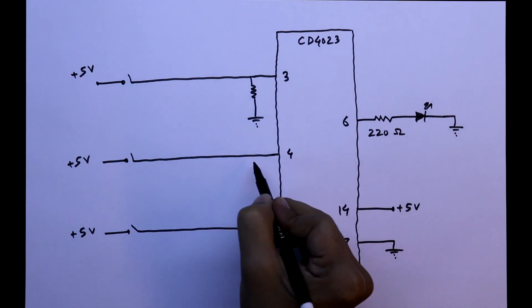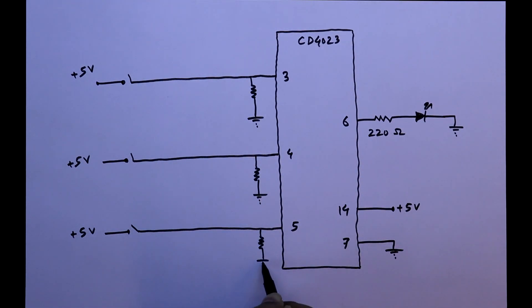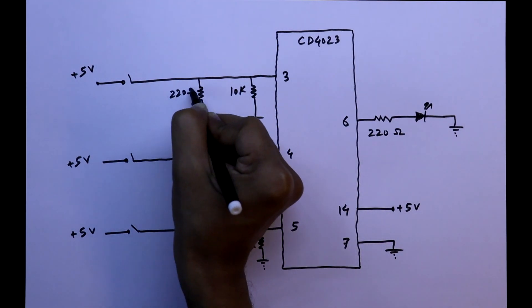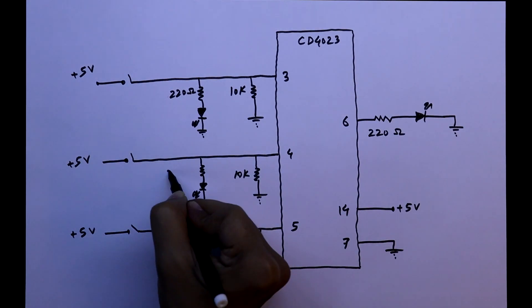And with this pin, we have to connect pull down resistor. And the value of this is 10 Kilo Ohms. And also we will connect LEDs to the input so that we can detect the input.